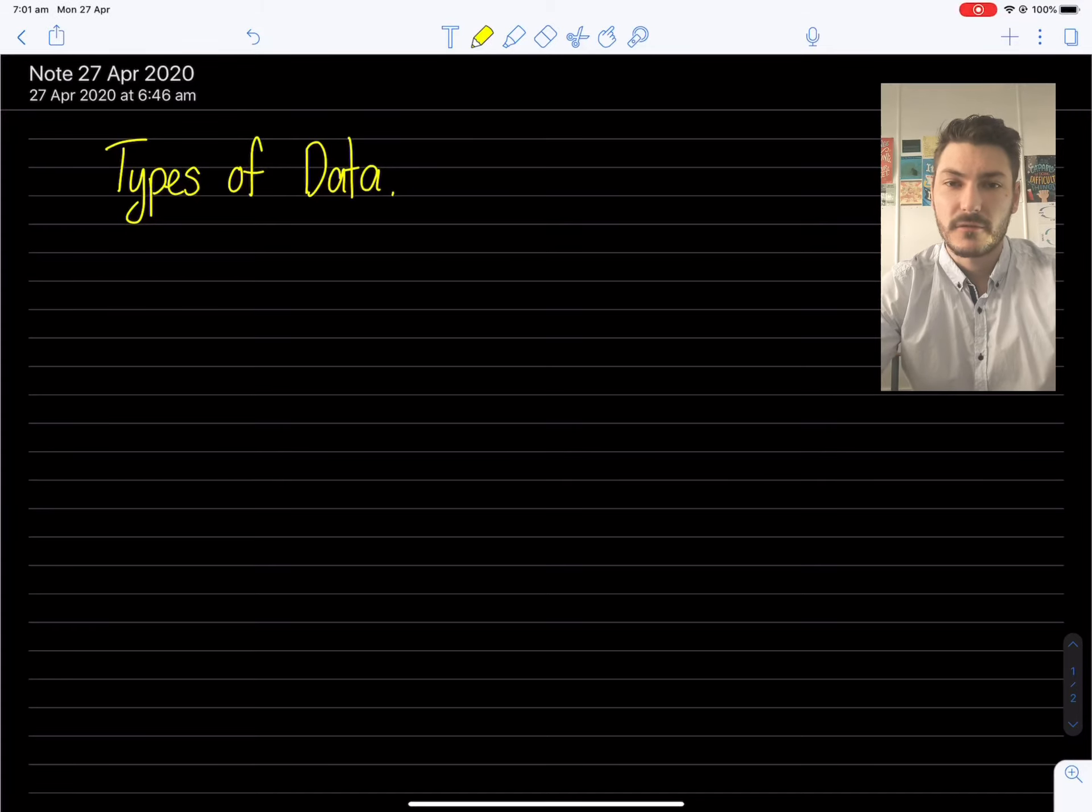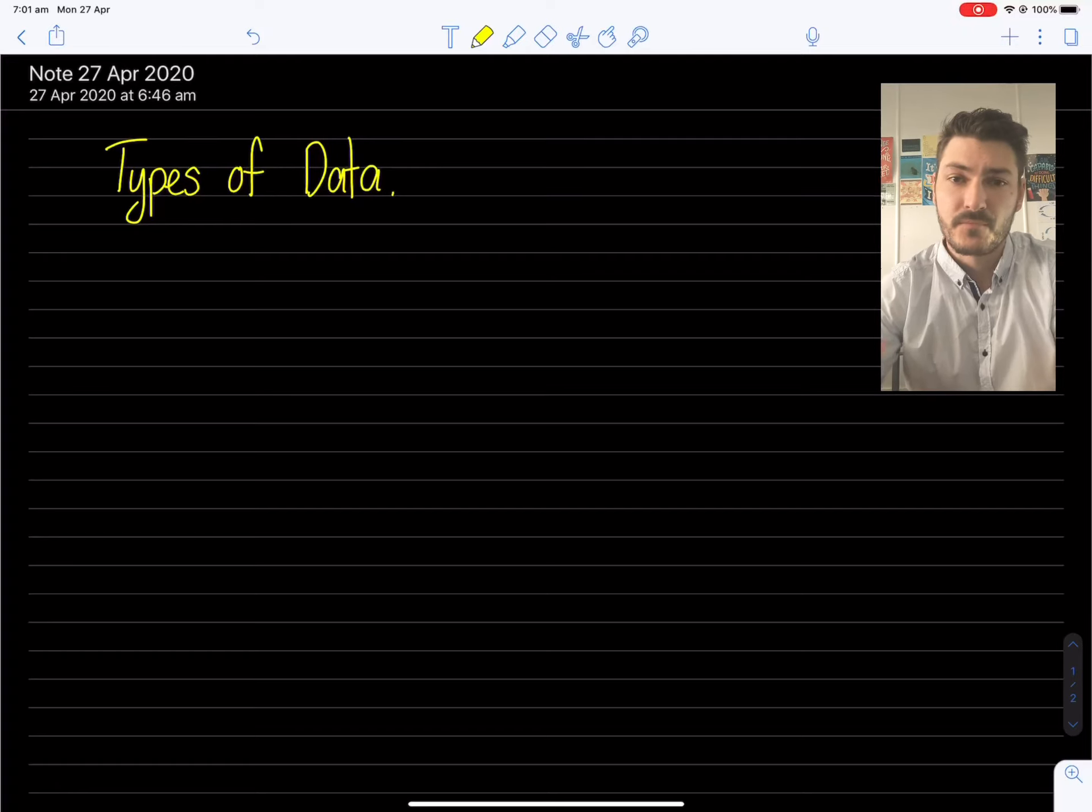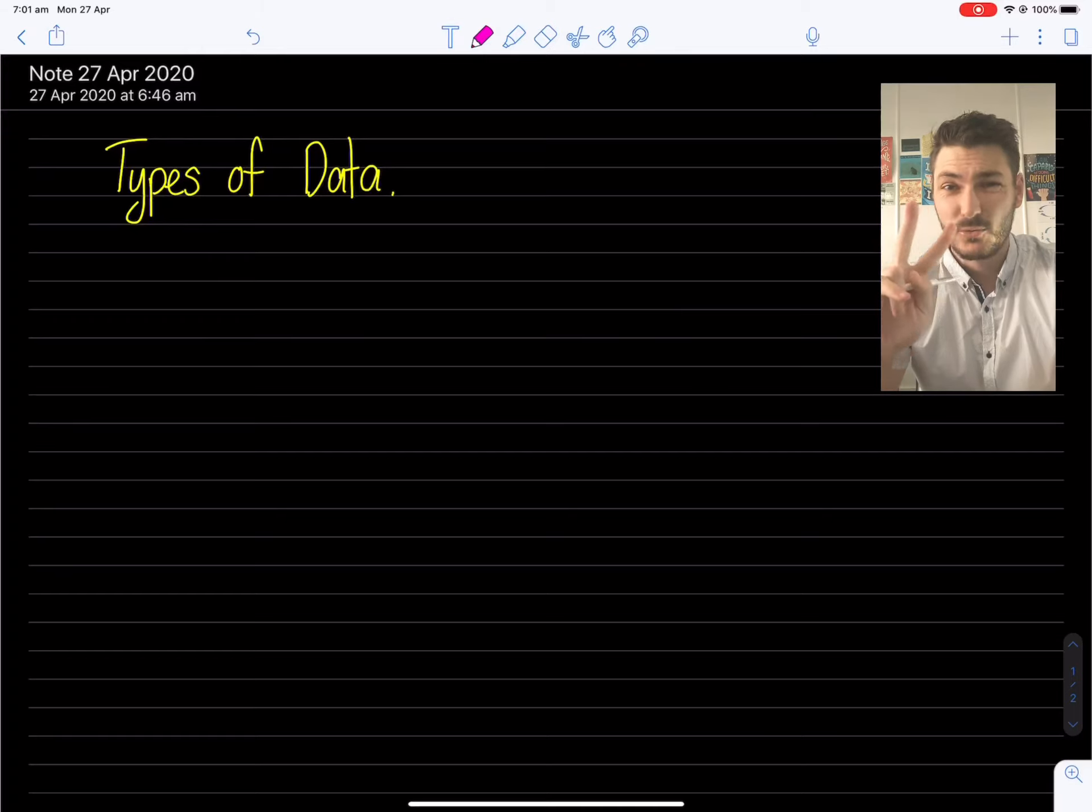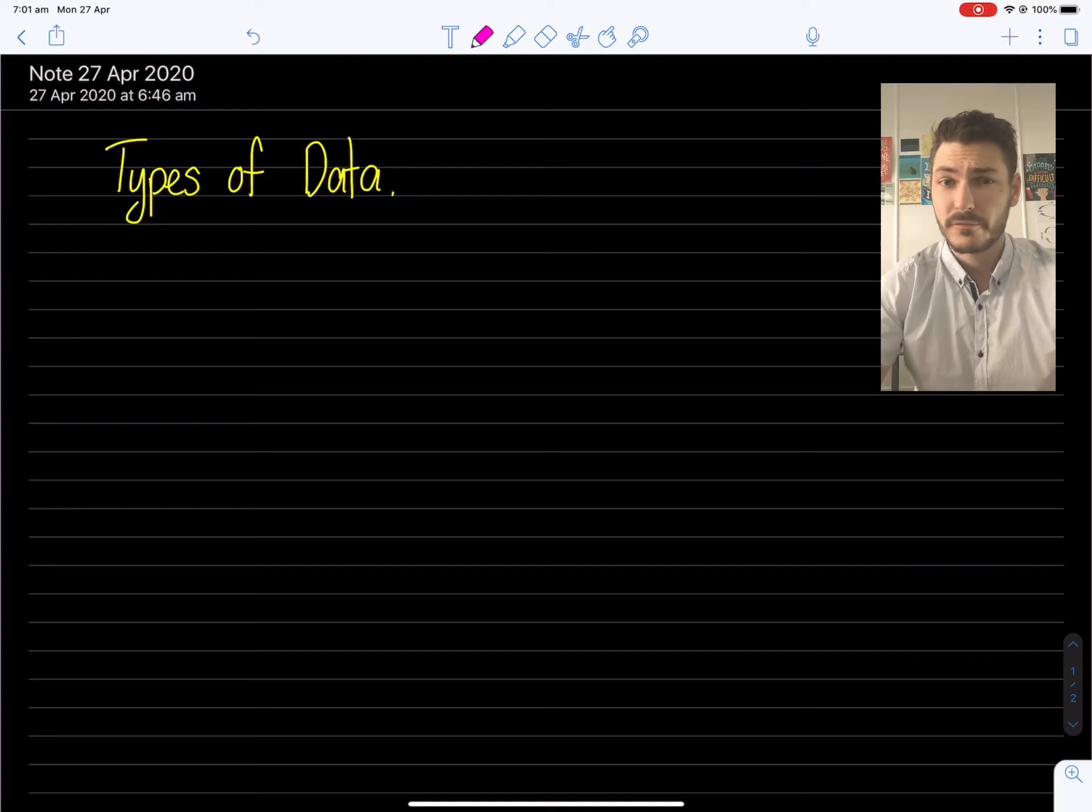Morning all. This is a video about the different types of data, just giving you a quick breakdown about the main points of difference and a couple of examples of each, which hopefully clears a few things up. So to start with, I've got the heading types of data and there are two overarching main types of data and they're hopefully pretty self-explanatory, especially in the titles.